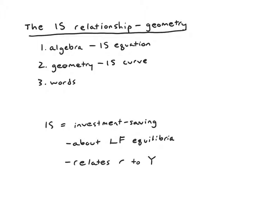As a brief reminder, IS stands for investment-saving. This is basically about the loanable funds market — something we studied much earlier in the course — where we traced out a savings curve and an investment curve, and they had an intersection that determined the real interest rate. We're focusing on that same diagram as our building block, but now thinking about how different levels of income Y would lead to different interest rates, giving us the relationship between R and Y. Plotting that relationship is going to give us our IS curve.